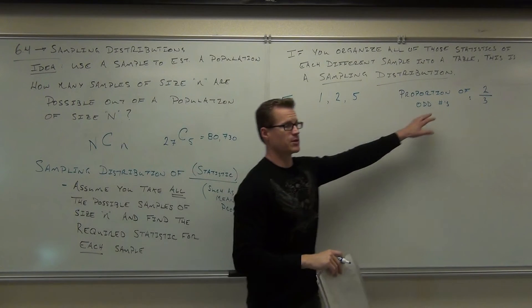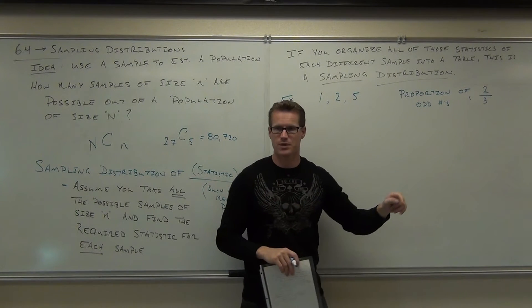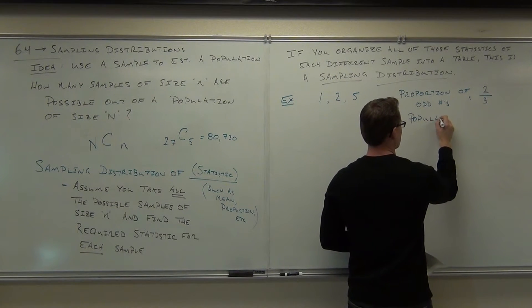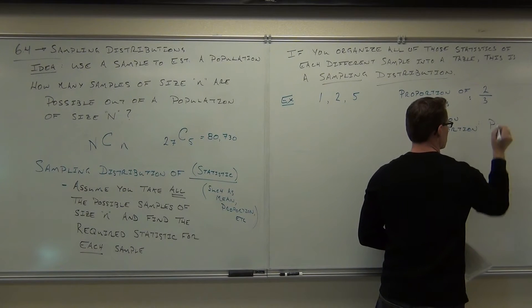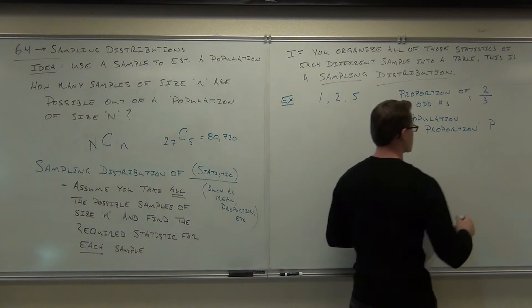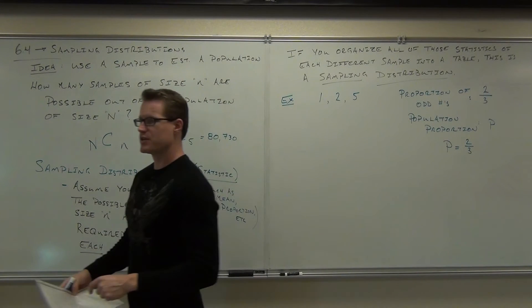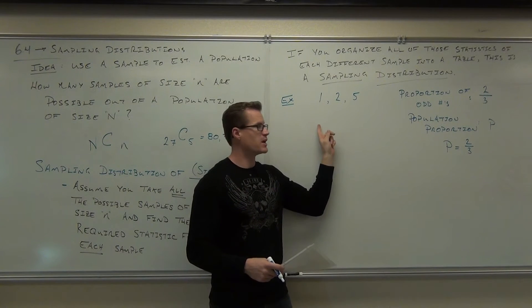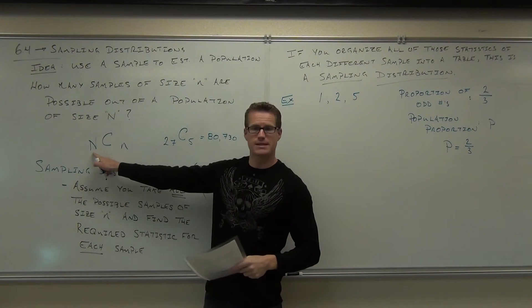What we're going to do now, this is not a sampling distribution, by the way. This is looking at the entire population. That's the population proportion. Population proportion is a lowercase letter p. So in our case, p equals two-thirds. The population proportion of odd numbers in our case, because this is our population. That's all that's possible is one, two, or five. This is a very simplistic example. I only have three items.